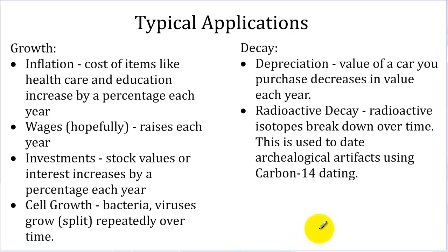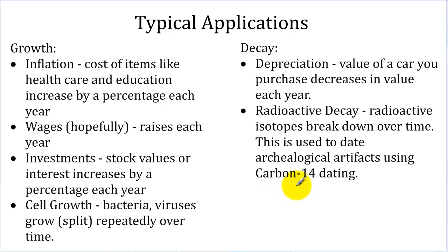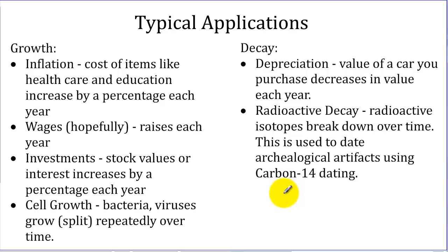Some things decrease in value. If you buy a new car, as soon as you drive it off the lot it starts decreasing in value, decreasing by roughly a fixed percent each year — that's called depreciation. Some of you have heard about carbon-14 dating, a way of dating archaeological artifacts by measuring a radioactive carbon that breaks down into a non-radioactive version, which follows an exponential model.